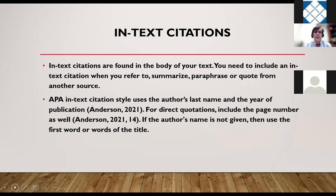You would use in-text citations, which are found in the body of your text. You need to include in-text citations when you refer to, summarize, or paraphrase from another source. APA in-text citation uses the author's last name and the date of publication — for example, Anderson, 2021. For direct quotations, in addition to the author and year, you would also include the page number — so Anderson, 2021, page 14. If the author's name is not given, then you would use the first word or words of the title.